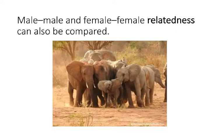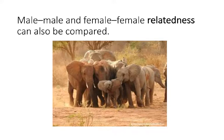Another population-level approach is to determine relatedness. We look at a population, compare all males to each other and all females to each other, and determine whether their relatedness differs. In the elephant example, females form herds where multiple generations stay together, so female relatedness is very high. In contrast, a male elephant in a herd will have low relatedness to other males because he likely immigrated from a different population — indicating male-biased dispersal.